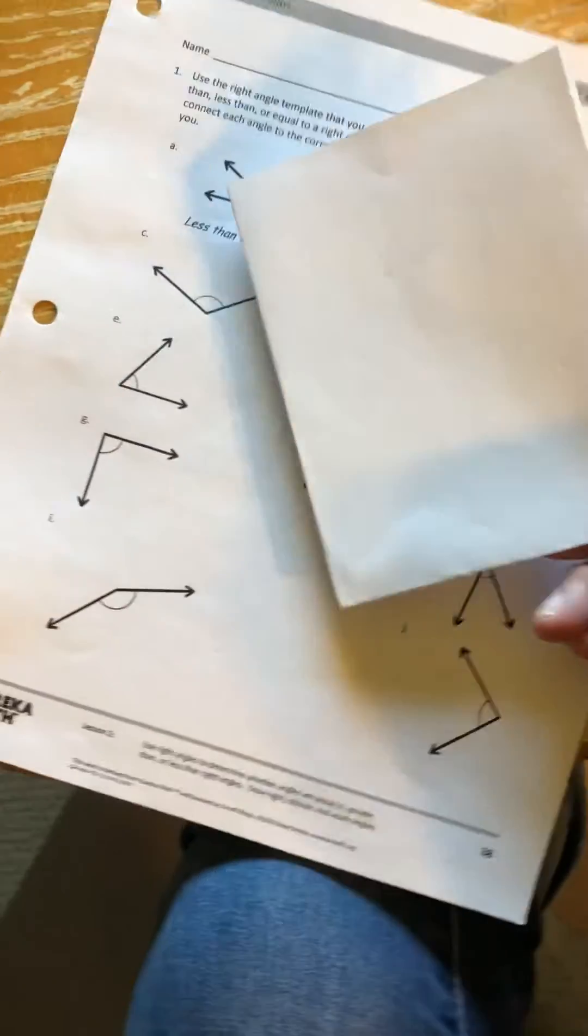That's how you make a right-angle template. And like what Mrs. Cargill said in last week's lesson, you can use anything that has a right angle, but you can also make one. All right, thank you.